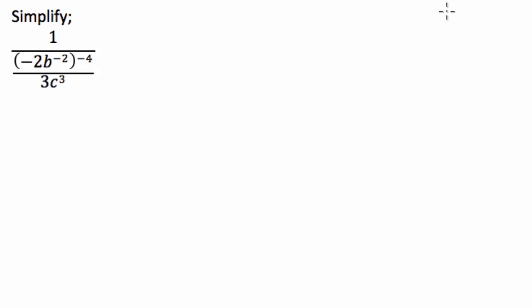So what I can do is I can say, well, one divided by a over b is the same as saying one times b over a. So what I'm going to do is go straight in and say this is going to be equal to one times three c cubed over negative 2b to the negative 2, or to the negative 4.